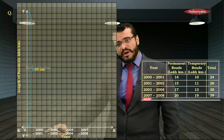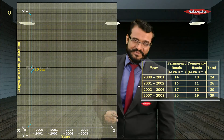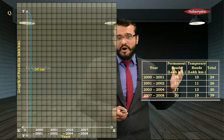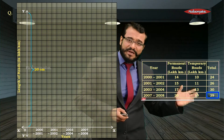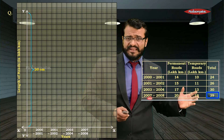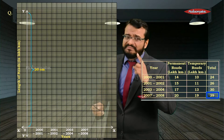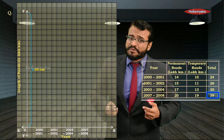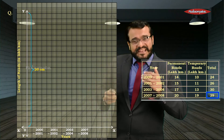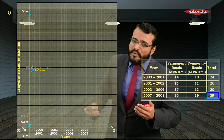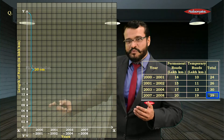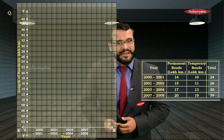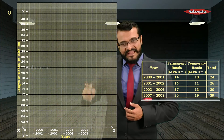For the y-axis, you have approximately 20 centimeters available. The largest number to accommodate is 39. A scale of 1 cm = 1 unit won't work since you only have 20 cm, so increase the scale to 1 cm = 2 units. The y-axis will then progress: 2, 4, 6, 8 … up to 40.